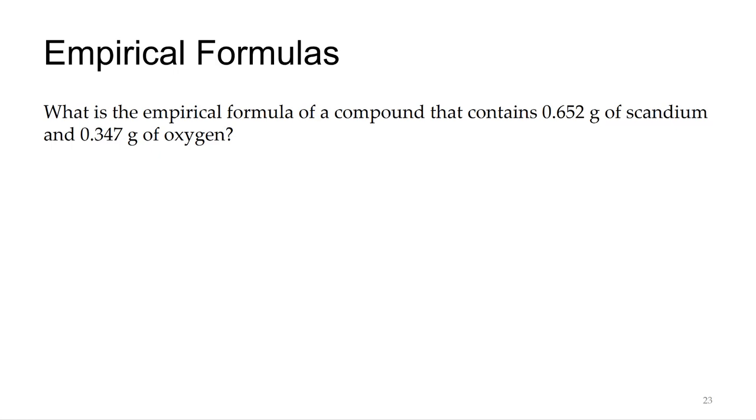The empirical formula of a compound is the lowest whole number ratio. The whole number ratio can be in terms of the atoms, or a lot of times we just say the lowest whole number molar ratio, because we often will put this in terms of moles.